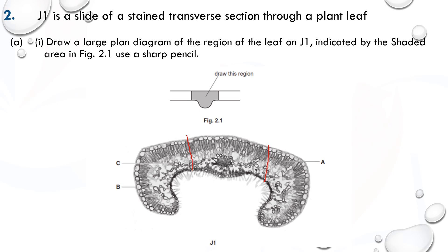You can see that region - you should draw it. Remember in a plan diagram we just draw the outline of tissues - cells that form a tissue. Make sure you draw it, try it first. Pause this video and try it.